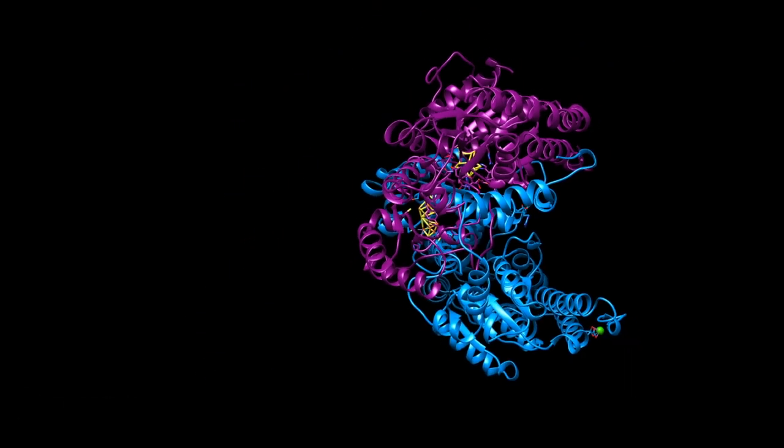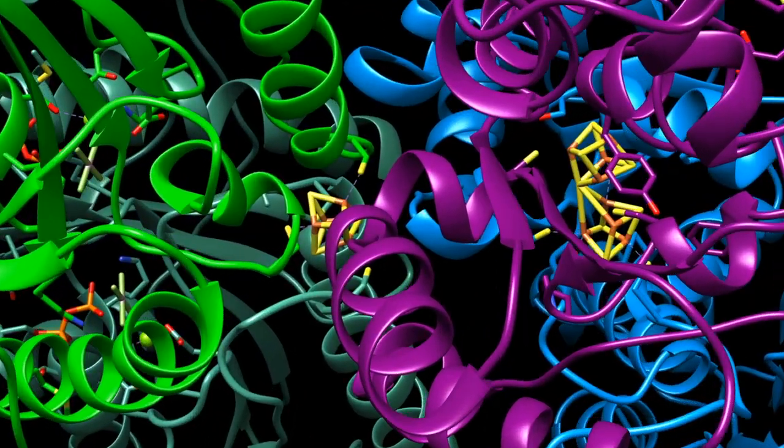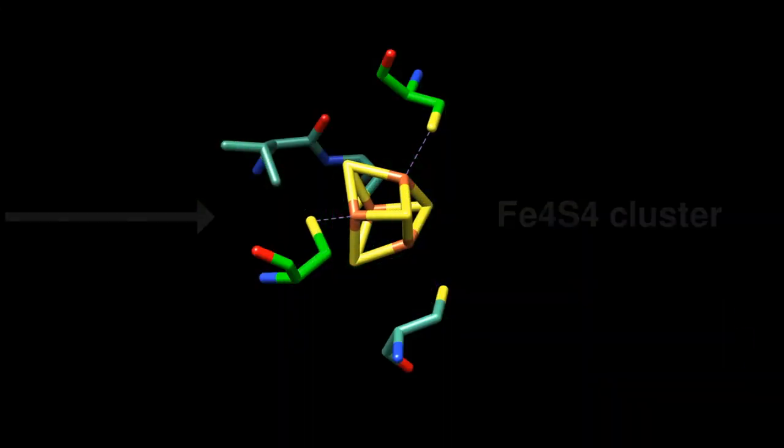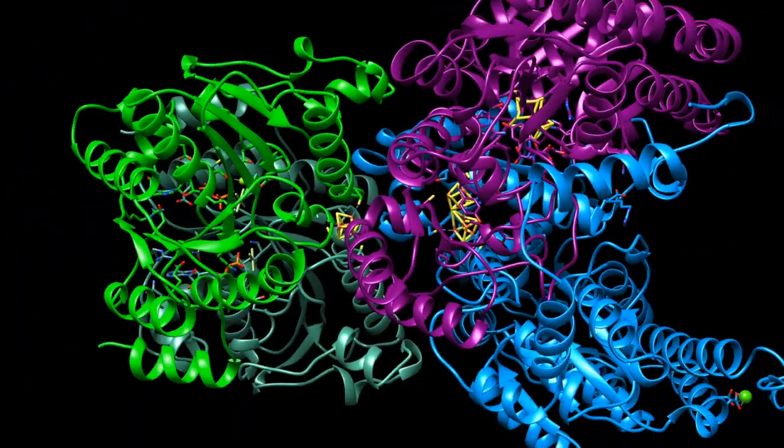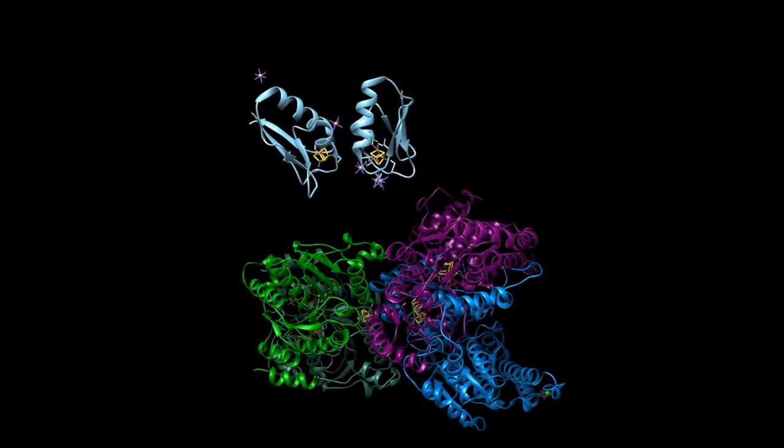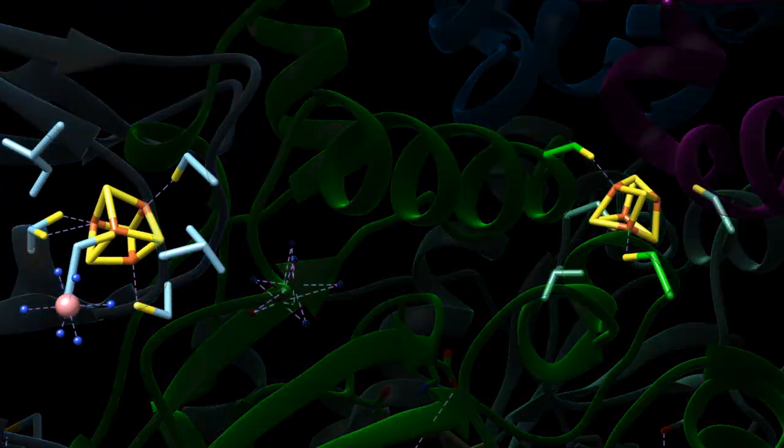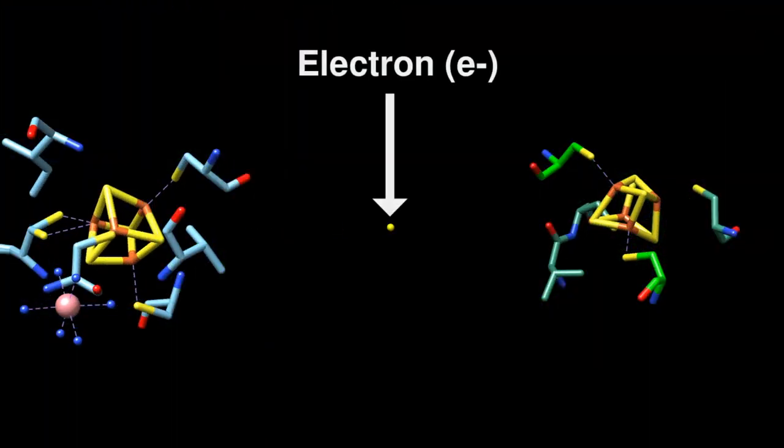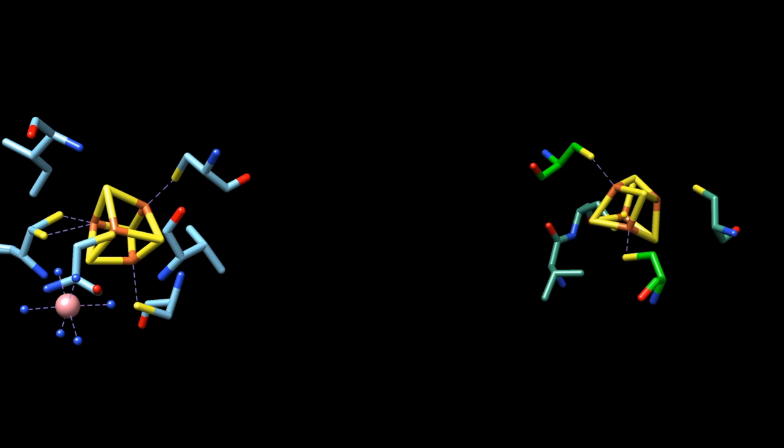The iron protein, known as the reductase, contains the iron-4-sulfur-4 cofactor, often called the Fe cluster. The process of nitrogen fixation starts here as the iron protein transfers electrons obtained from reducing agents such as ferredoxin to the molybdenum iron protein.